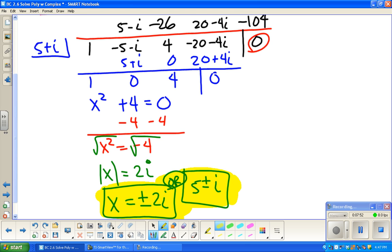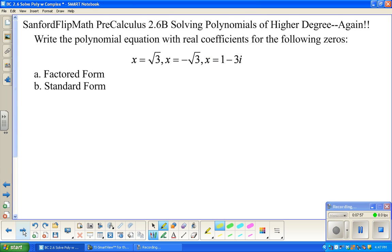All right, so we're going to do one more example. And the other example that we're going to do is going backwards. I'm giving you three zeros. I'm asking you to write a polynomial equation with real coefficients. Now, those words with real coefficients get blown over quite a bit, and the only reason they're there is to tell us that if we have a complex zero with an imaginary part, then automatically we have to throw in its conjugate. Even though it's not in the list, you need to know it's in the list.